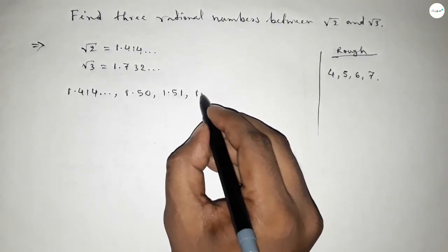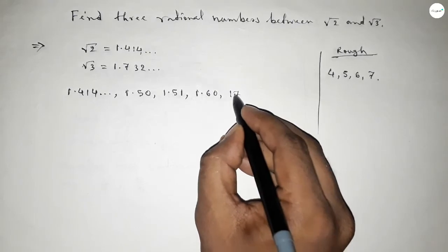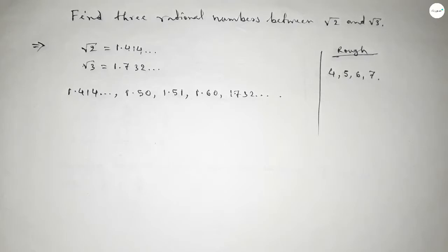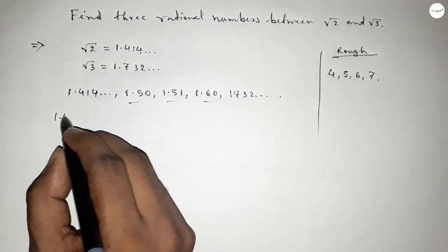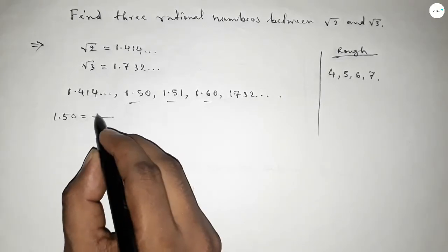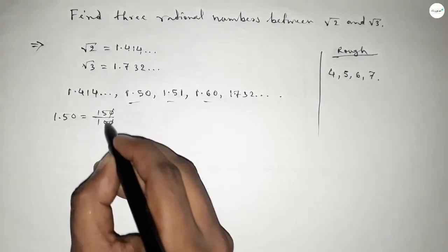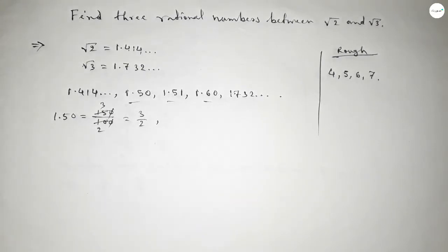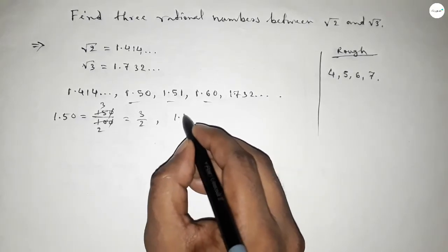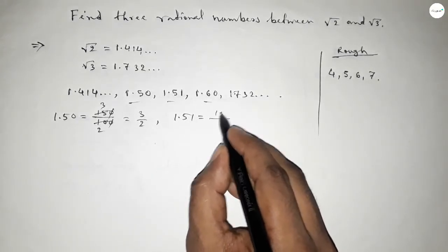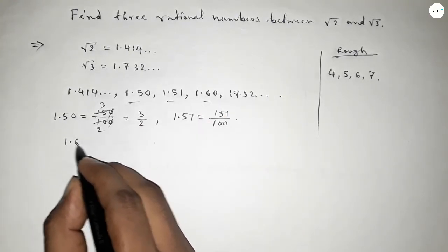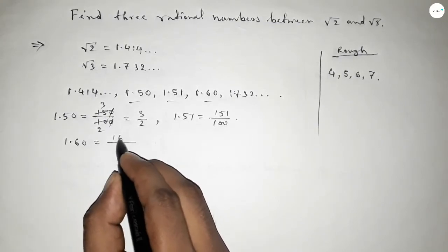So these are the three rational numbers between root 2 and root 3. Now simplifying: the first is 1.50, which equals 3 over 2. The second is 1.51, which we can write as 151 over 100. The last one, 1.60, we can write as 160 over 100.